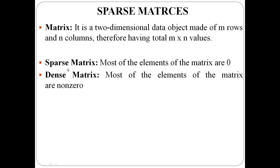What is a sparse matrix? In a matrix, most of the elements are zero — then it is called a sparse matrix. What is a dense matrix? In a matrix, most of the elements are non-zero — then it is called a dense matrix.